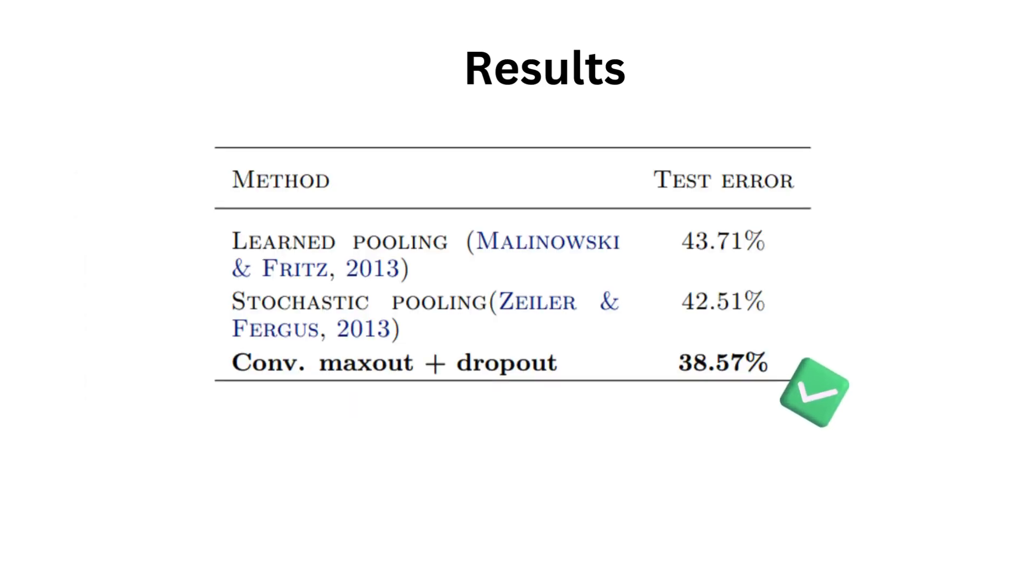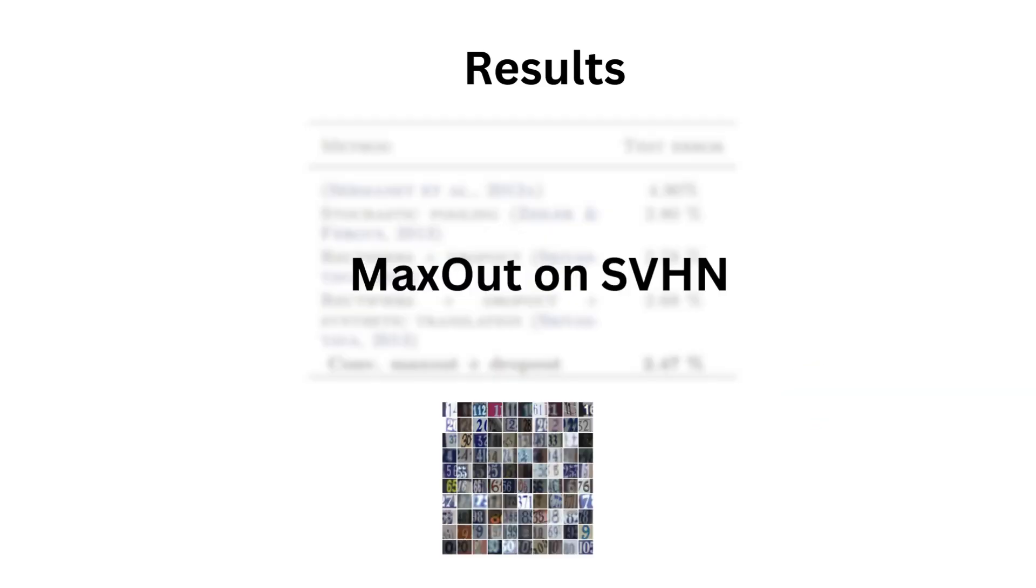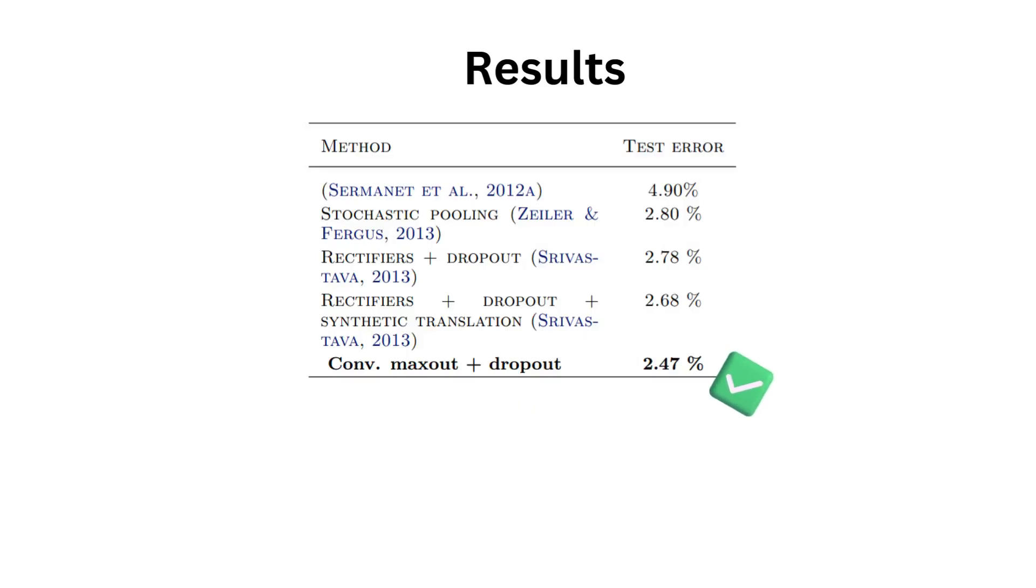Similarly, on CIFAR 100, the network obtained state-of-the-art by more than 3%. Finally, the maxout network on SVHN, again, state-of-the-art and performing better than the rectifier-based network.